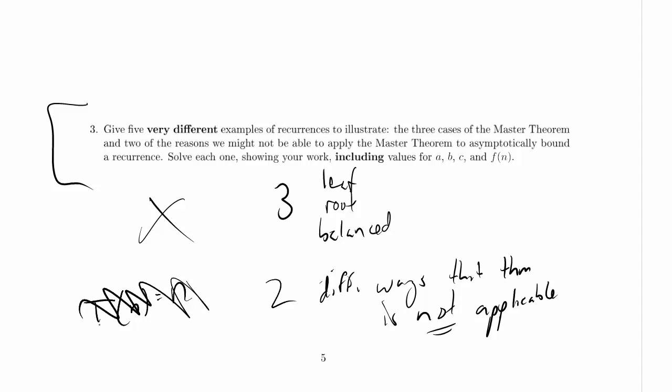Maybe the base case is not constant. Maybe the base case is actually proportional to n, and so on. There are lots of ways you can make the master theorem not apply. You should try some out. And it turns out we are going to work through, at least briefly, all the rest of the problems.